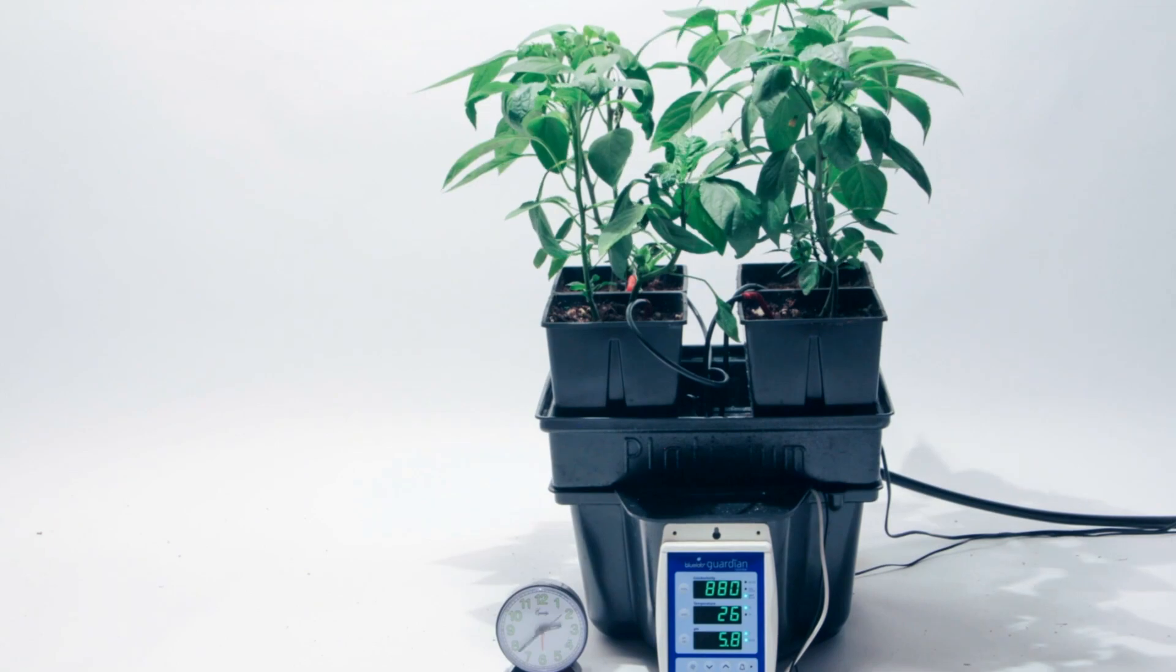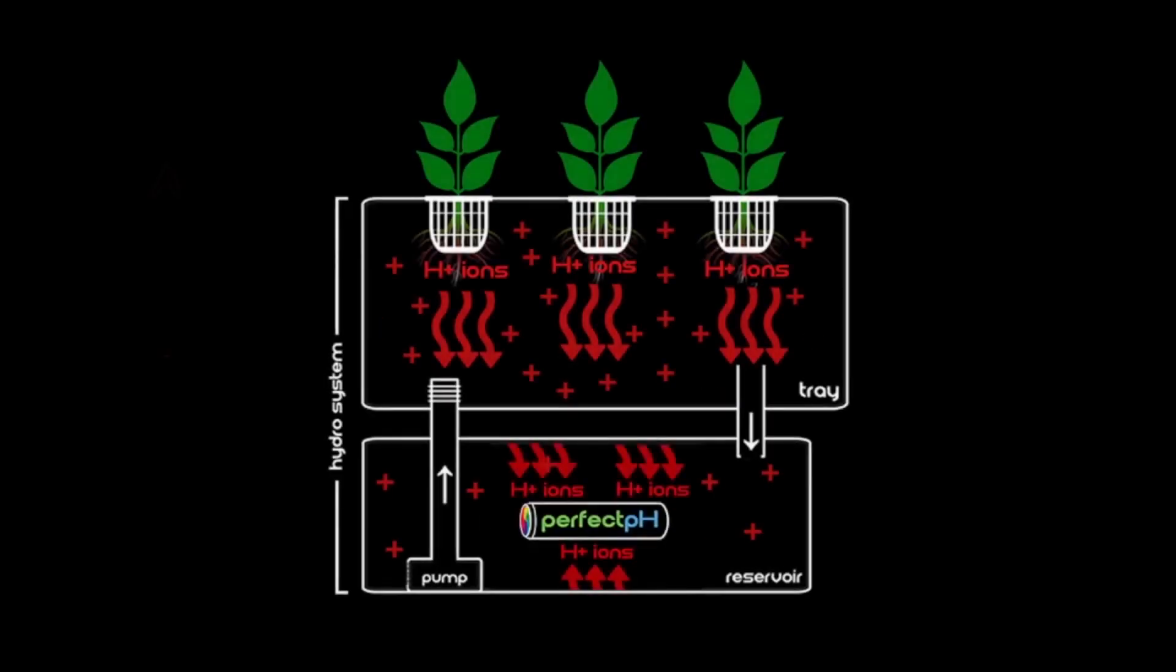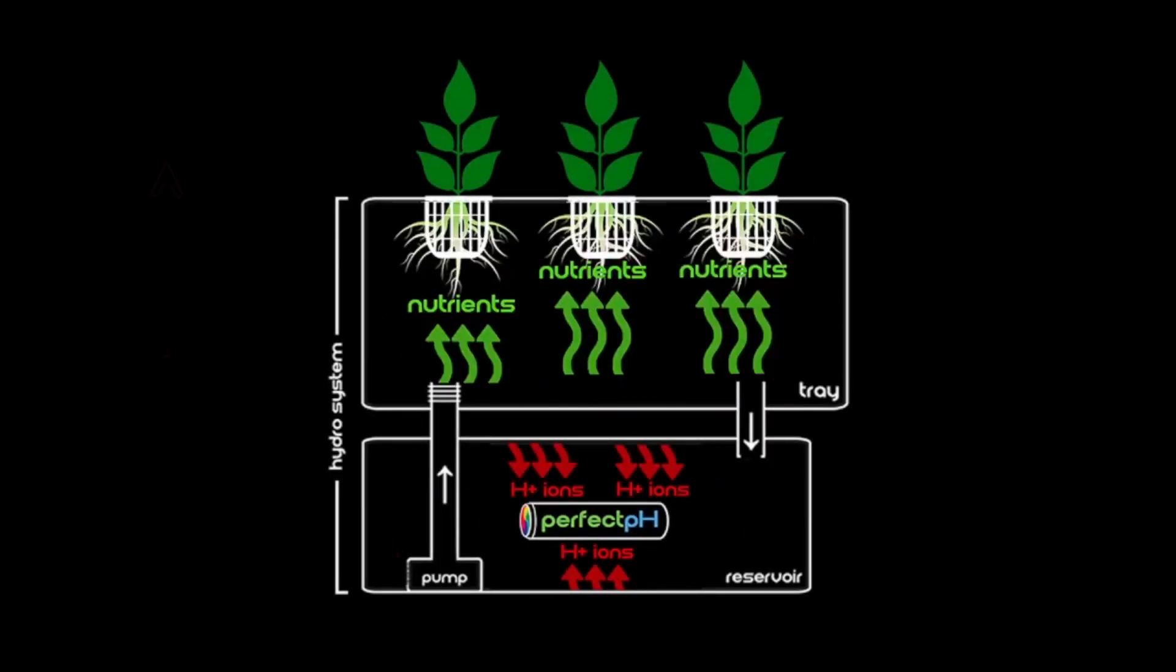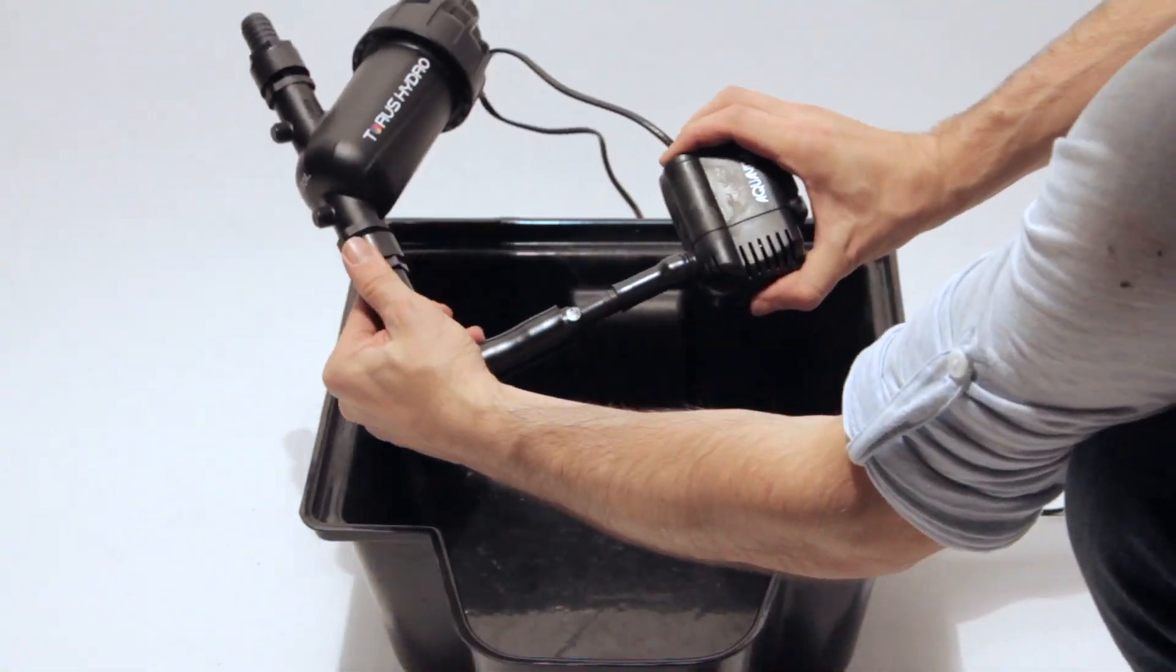By working on an ionic level, the Perfect pH is able to keep your system running smoothly, free of pH issues by attracting and eliminating the charged ion buildups that cause problematic pH swings. Just set your pH and forget about it—the Perfect pH does the rest.